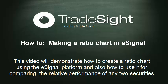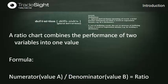Let's take a look at what that is and actually how to go about creating that ratio. What we're going to do is take a look at two different symbols. We want to open up just a plain eSignal chart. For the purposes of this demonstration, we're going to use just a simple line chart. We're going to go into the data window and type in a particular symbol.